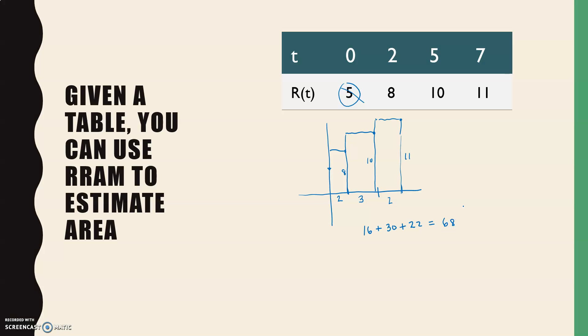And this is a bigger value than the other one. And it makes sense that this is a bigger value because this looks like an increasing function. So the right side will overestimate the function. And the left side would underestimate the function because it's increasing. So the right side would be higher than the left side.